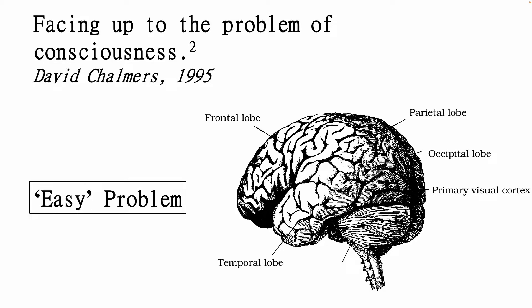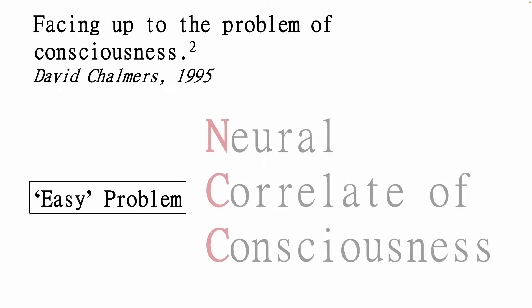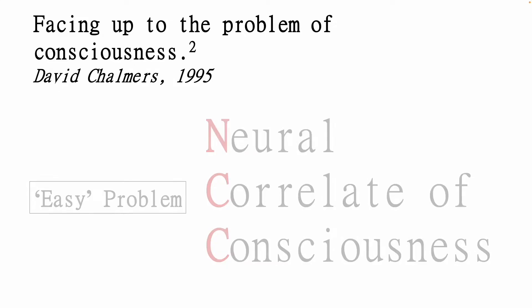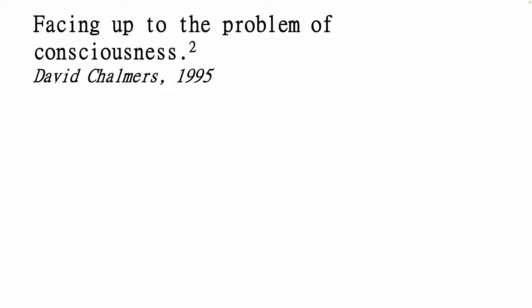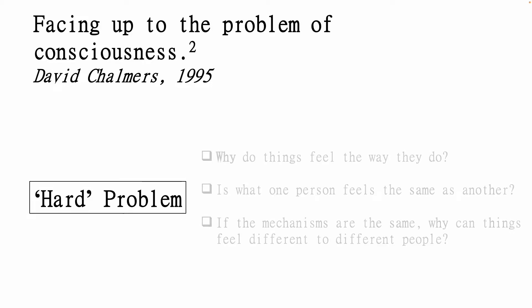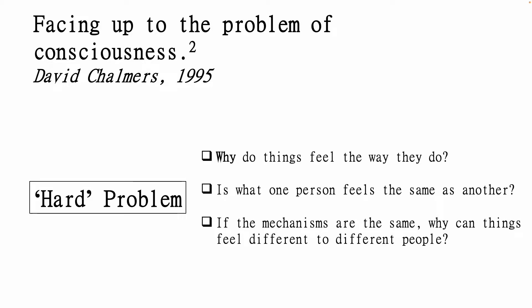Solving the easy problem results in identifying the neural correlates of consciousness — that is, as Seth and Bain put it, the minimal set of neural events jointly sufficient for a conscious state. However, neural correlates of consciousness are not sufficient to solve the hard problem. The hard problem is concerned with these sorts of questions: Why do things feel the way they do? Is what one person feels the same as another? And if the mechanisms are the same, why can things feel different to different people?